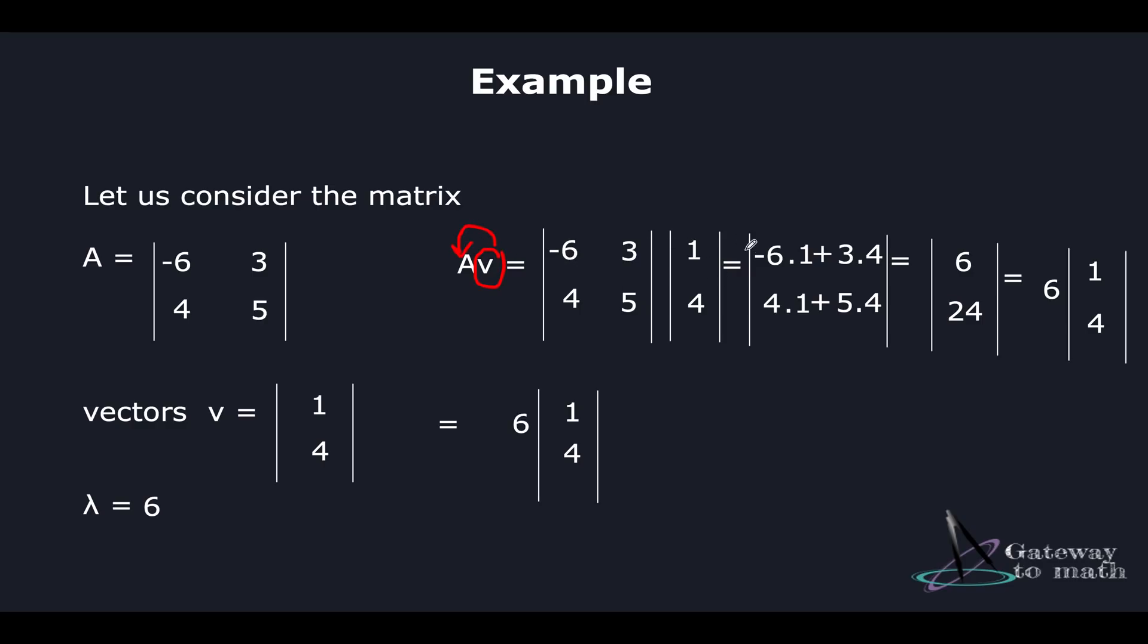So I multiplied this minus 6 multiplied by 1 plus 3 multiplied by 4. And then in the next row, 4 multiplied by 1 plus 5 multiplied by 4. This is 6 and 24. So it's minus 6 plus 12, which is positive 6 and 24. I can take the 6 out. And then this is 1 and 4. Because when you multiply 1 with 6, it becomes 6. And when you multiply 4 with 6, it becomes 24. So this condition has been satisfied.